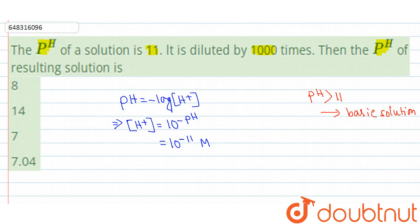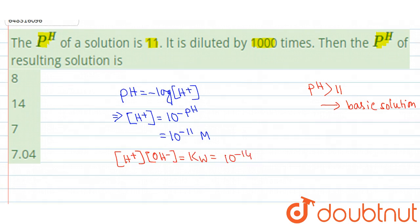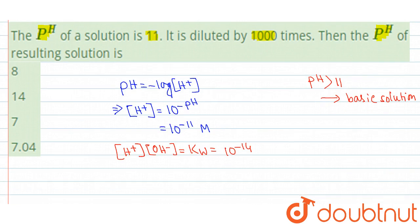So concentration of H+ we have got. Now we know that concentration of H+ into concentration of OH- is simply the ionic product of water, and that is nothing but 10 to the power minus 14. So the value of concentration of OH- will be 10 to the power minus 14 divided by 10 to the power minus 11, and that is 10 to the power minus 3 molar.